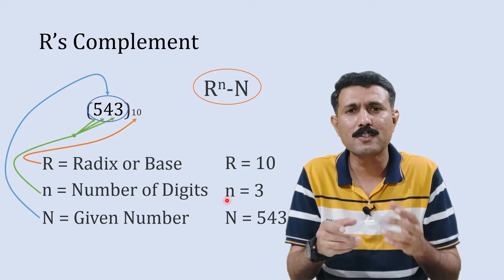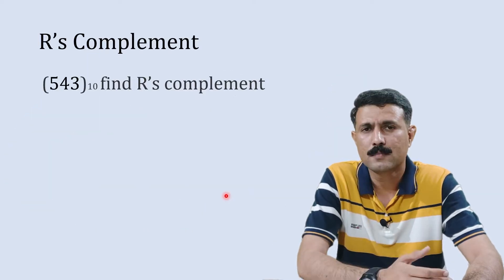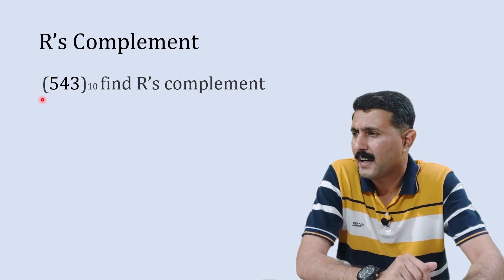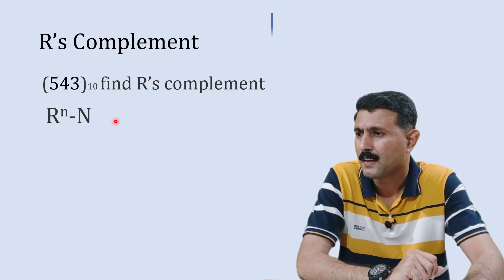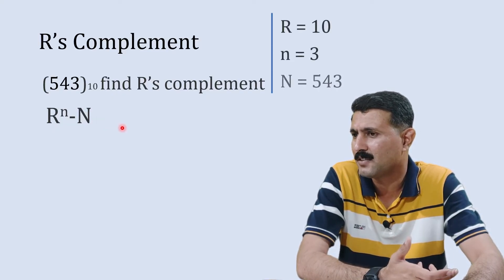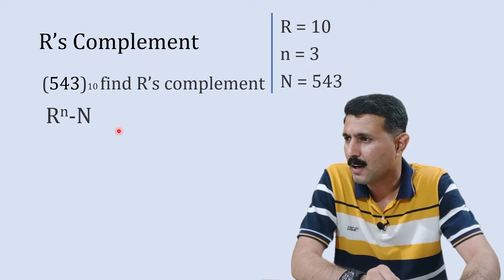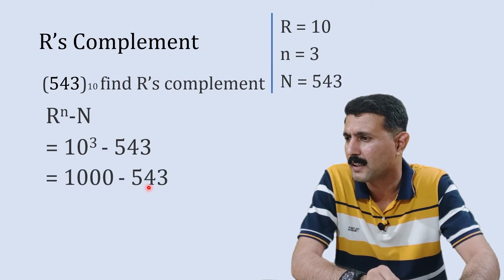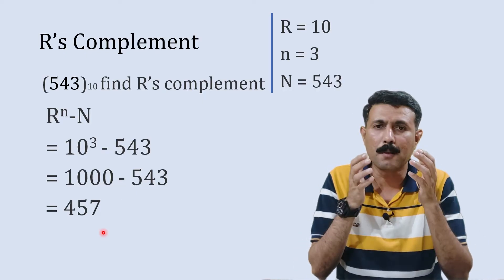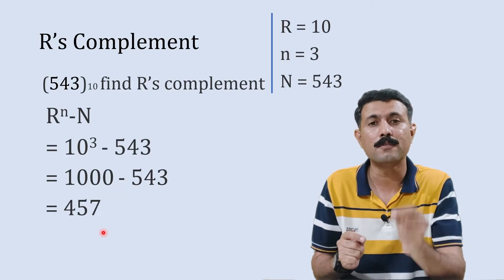Placing all values into the equation: 10 raised to 3 minus 543, which is 1000 minus 543, giving us 457. So 457 is the r's complement — that is, the 10's complement — of 543.